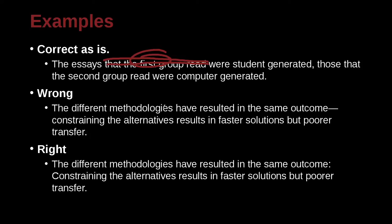The different methodologies have resulted in the same outcome. Constraining the alternatives results in faster solutions, but poor transfer. Here we have an example of a dash. A dash will explain this last little bit or change the tone in the sentence. In this case, what we're doing is adding information to make it more clear. In fact, we have two independent sentences, and if you have two independent sentences and you're just trying to put them together, you can use the colon with a capital.